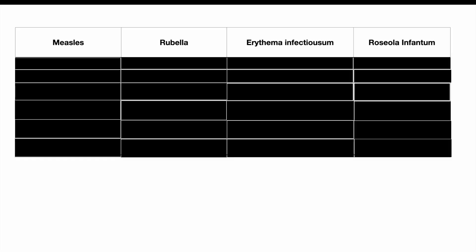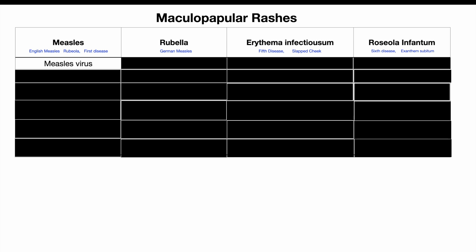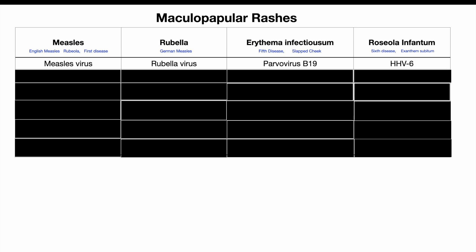Here is a list of the four viral exanthems that cause maculopapular rash in kids with their various other names. They are all caused by viruses: measles by the measles virus, rubella by the rubella virus, erythema infectiosum by parvovirus B19, and roseola infantum by human herpes virus 6.